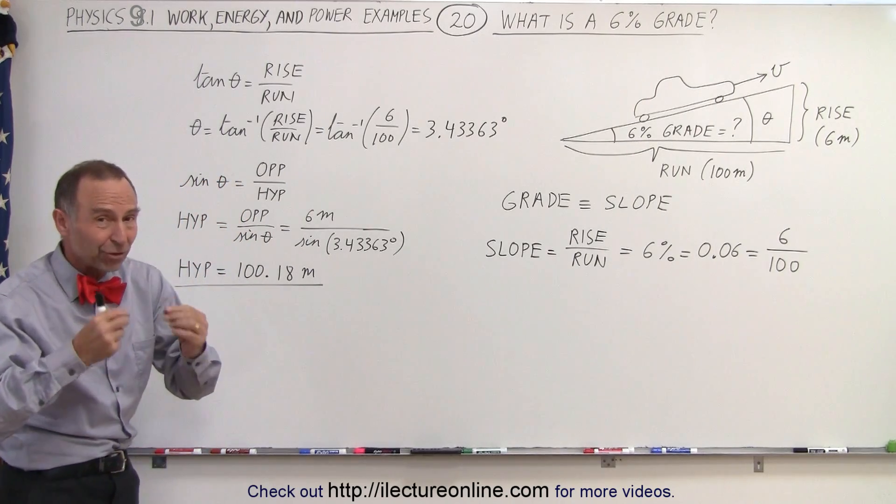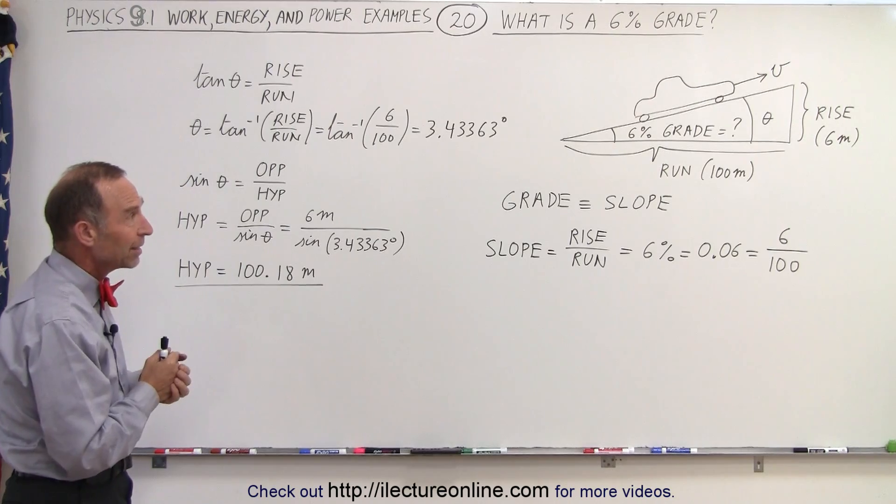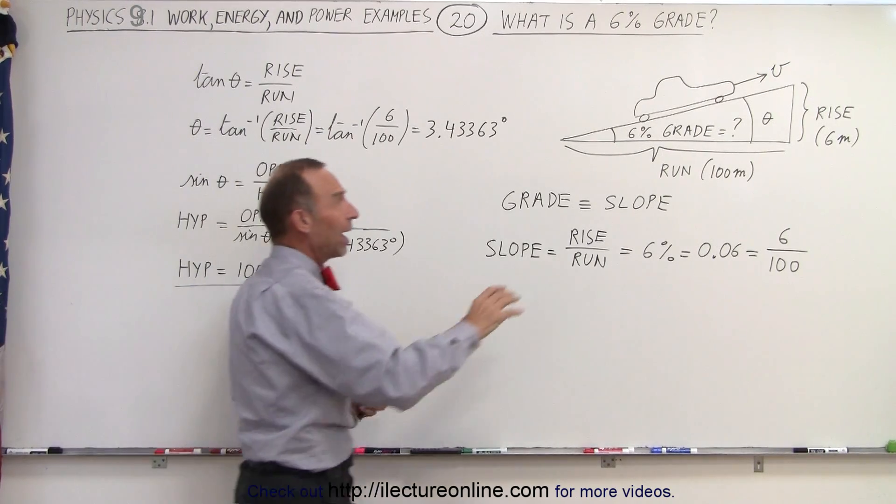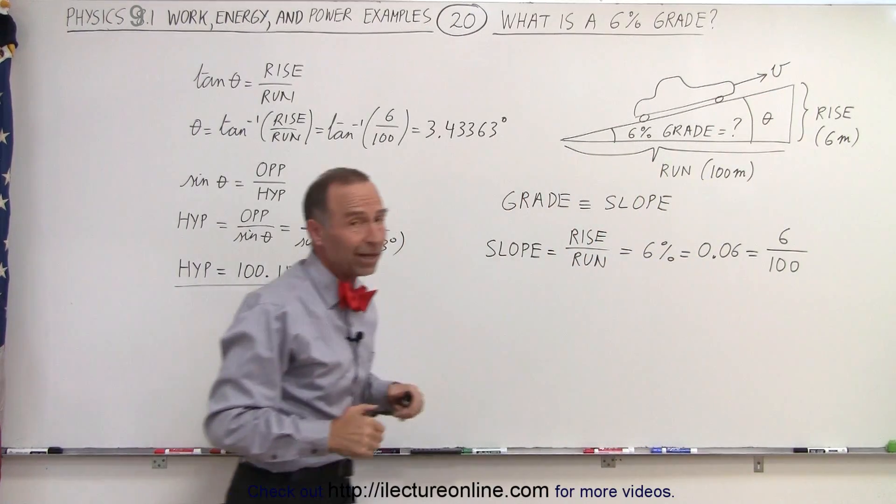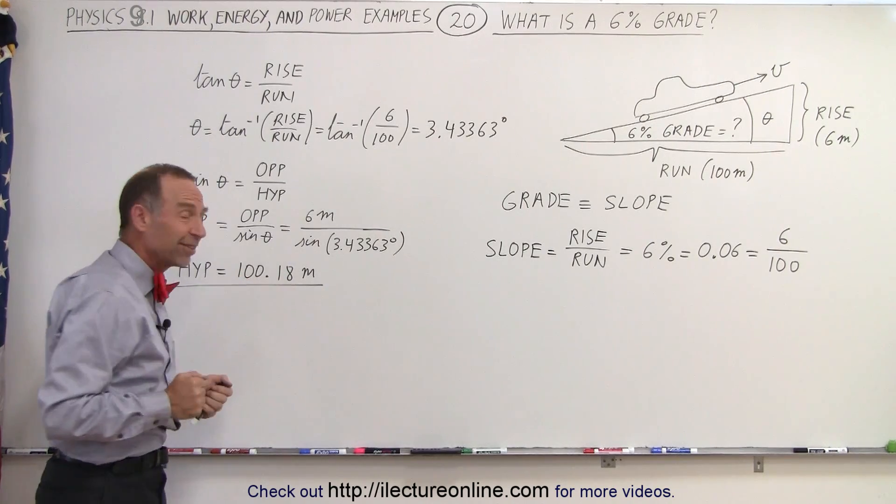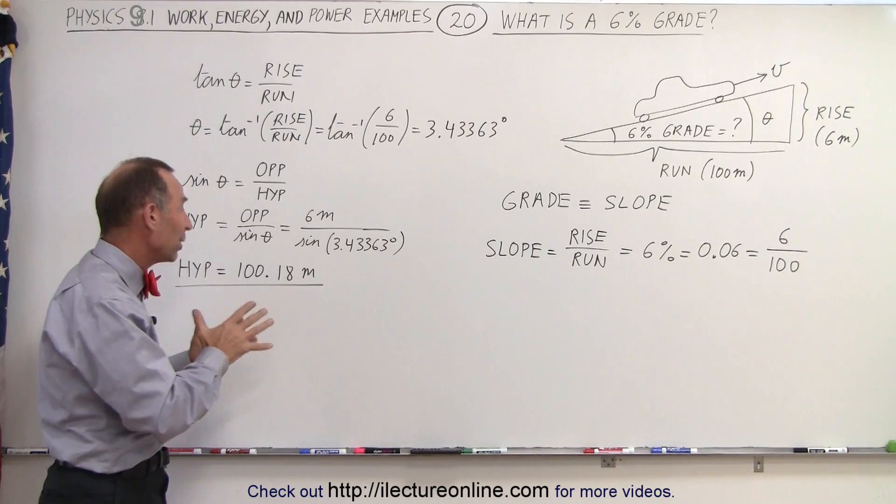So notice that the car actually travels 18 centimeters more than the horizontal distance. It's a very small amount. In effect, it really doesn't make much of a difference, but to be absolutely correct, the definition of a grade is the rise divided by the run, which means the height gained by the car divided by the horizontal distance traveled. Now you can see that at a grade of 6%, it only makes a difference of 0.2% or not even 0.2%, so it's not really that important.